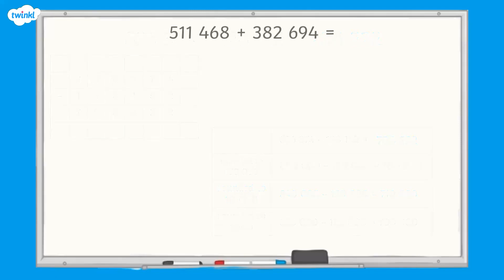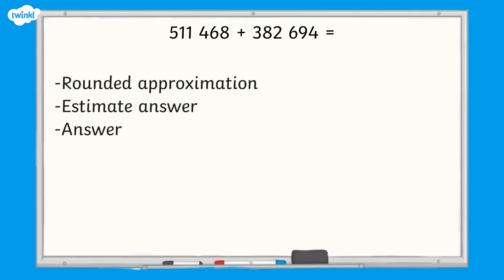Now it's your turn. The calculation is 511,468 add 382,694. Choose which multiple you are going to round to for your estimation and mentally calculate your approximation.